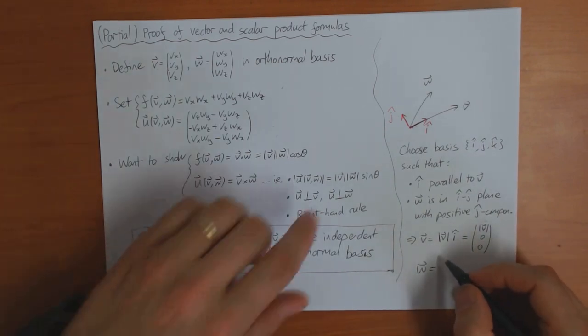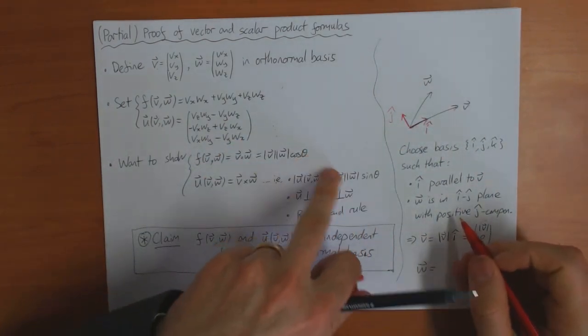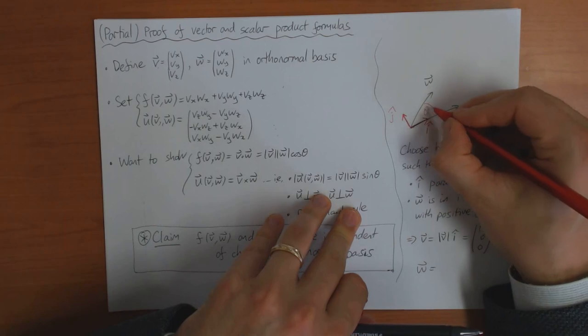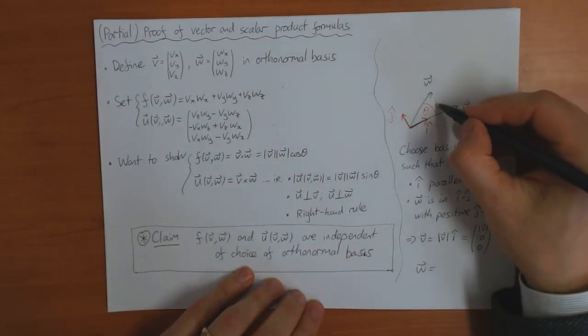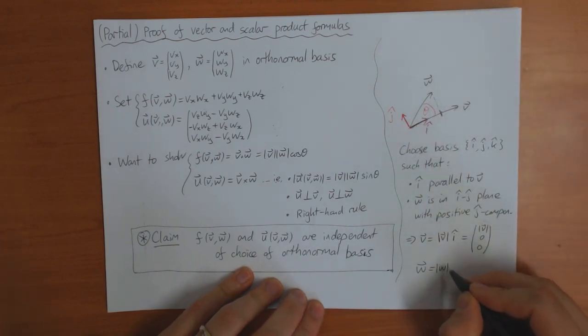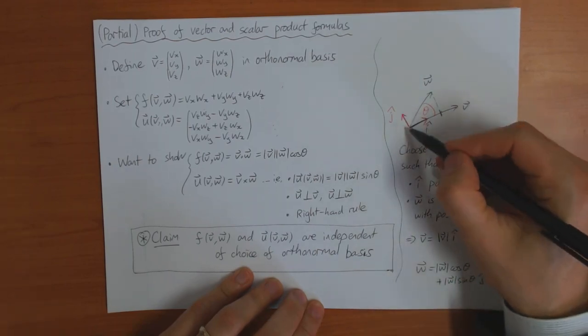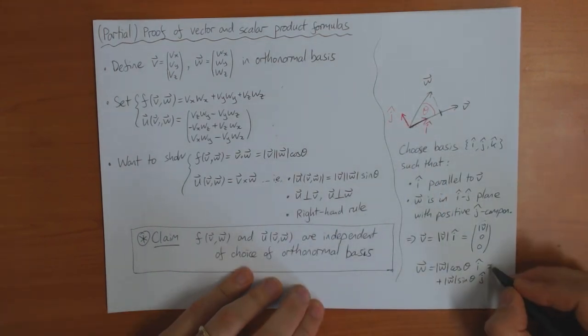And similarly, w, then, if this angle here is theta, which is what it is in these formulas here, then we can say that w is equal to, just using trigonometry, w cos theta times i plus w sine theta times j, because we assume it's in the positive j direction.